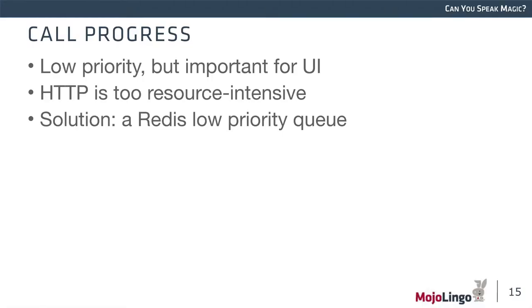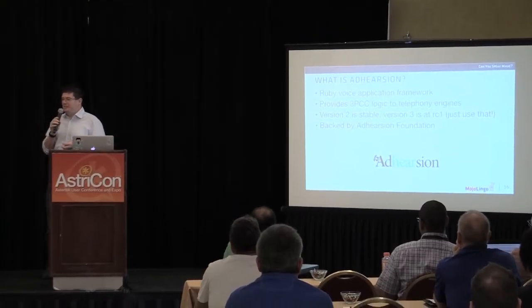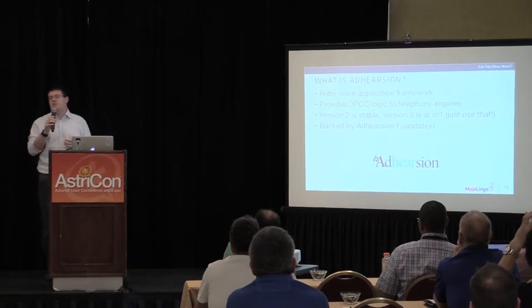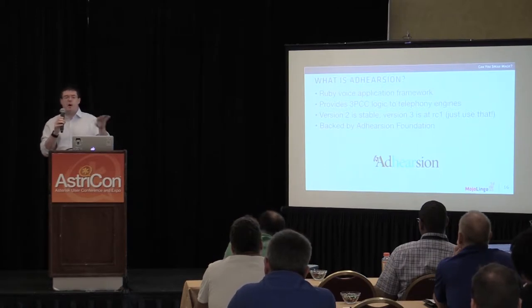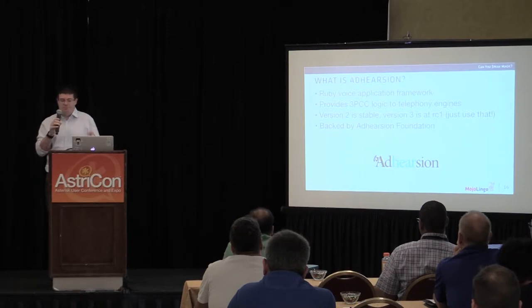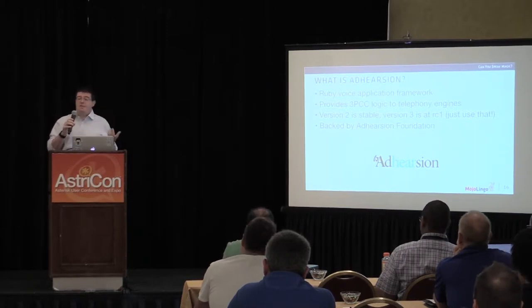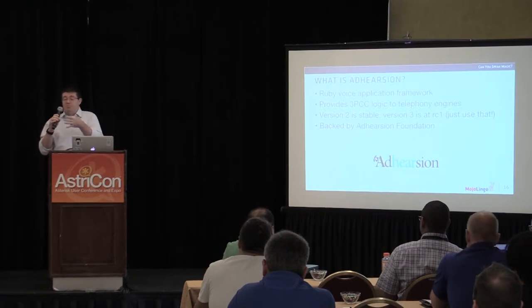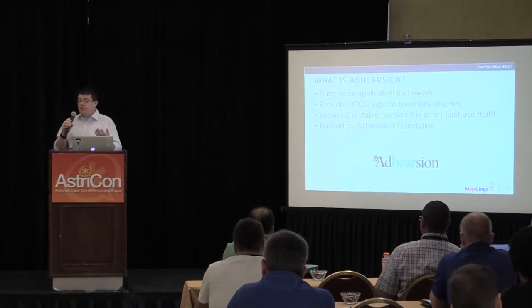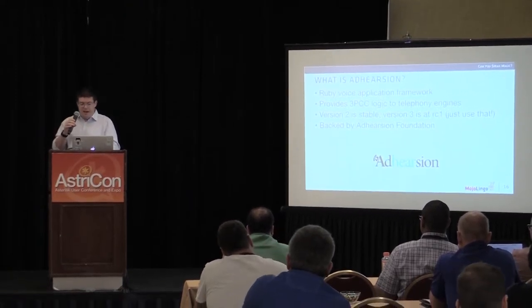What is Adhearsion? It's a Ruby voice application framework — third-party call control, essentially a dial plan on steroids. It allows anything a dial plan does and much more, including reacting to events and originating calls. It's backed by a foundation. We've been at RC1 for a while — eventually it will become Adhearsion 3.0. It's in production in this system and hundreds of others. I prefer open source projects backed by large companies, consulting companies, or foundations — so it's never going away.